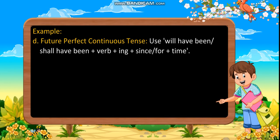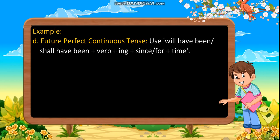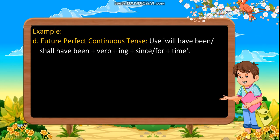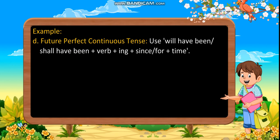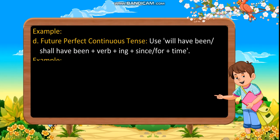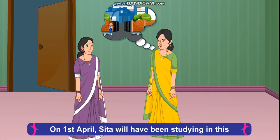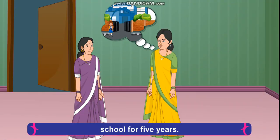Future perfect continuous tense: Use will have been or shall have been plus verb plus I, N, G, plus since or for plus time. Example: On 1st April, Sita will have been studying in the school for 5 years.